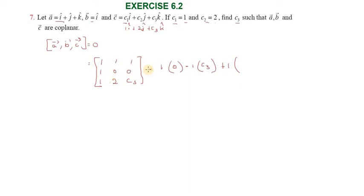Then plus 1 into 2 minus 0, so 2 equals 0. The total is 0. It is negative c3 plus 2 equals 0. Simplifying, c3 equals 2. So c3 value is 2. Thank you students.